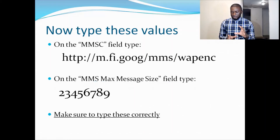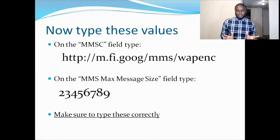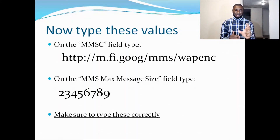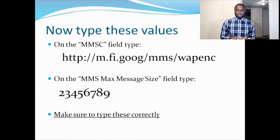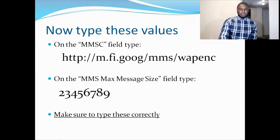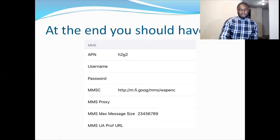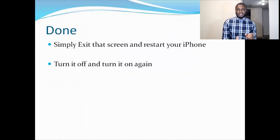There might be other forms on this page — you're not doing anything with those; just leave those as they are. Type in the information on only those two forms. Check everything and make sure you typed everything exactly as shown on the slide. Go through them, make sure everything is typed correctly, and your screen should look exactly like the slide. When you're done, exit that screen, exit that page on your iPhone, and then restart your phone.